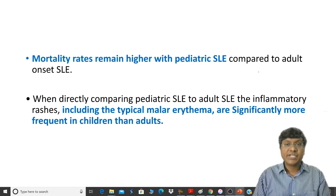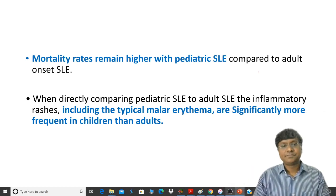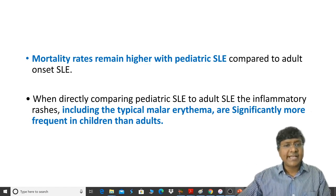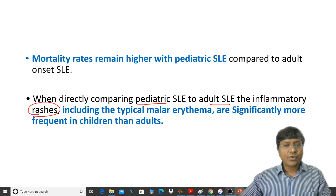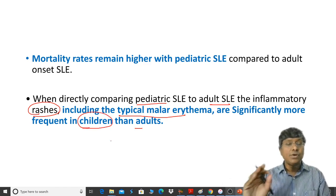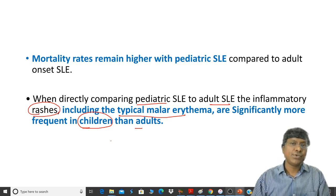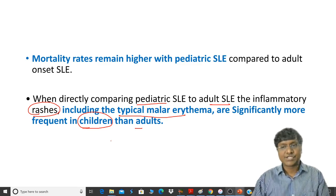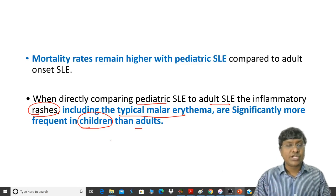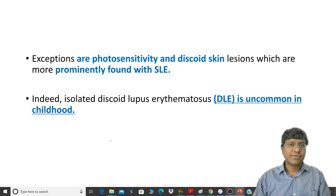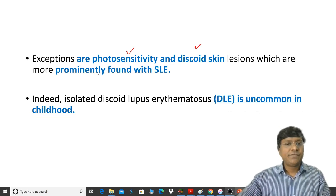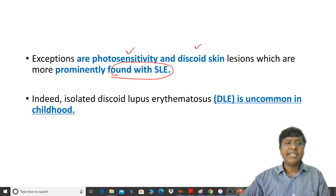The mortality rate in pediatric SLE is comparatively very high compared to the adult population. When directly comparing pediatric SLE to adult SLE, inflammatory rashes including the typical malar rash are significantly more common in children. This malar rash is very common in children with SLE compared to adults. Exceptions include photosensitivity and discoid skin lesions, which are also prominently found in children with SLE.